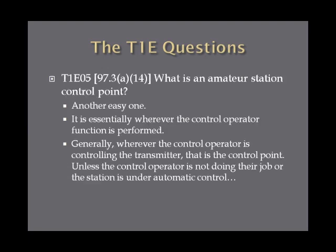What is an amateur station control point? A control point is essentially wherever the control operator function is performed. So wherever the control operator is controlling the transmitter, that is the control point. The only legitimate exception to this is when the station is under automatic control, which we'll get into in the next question.